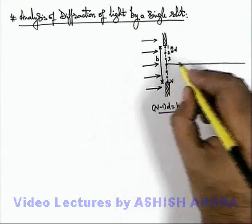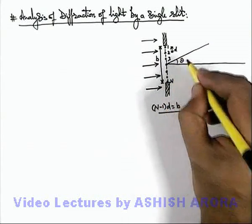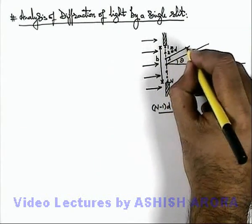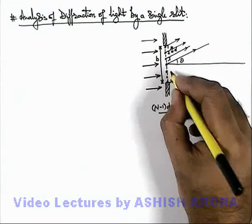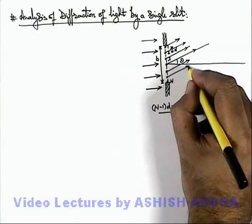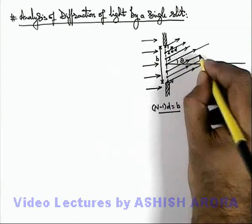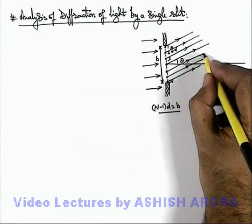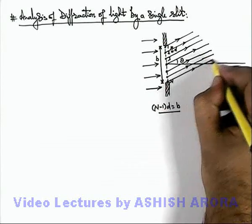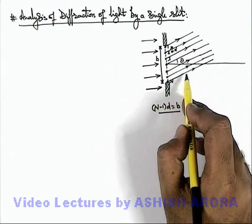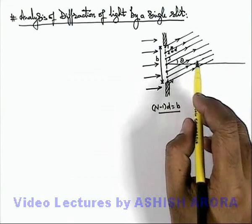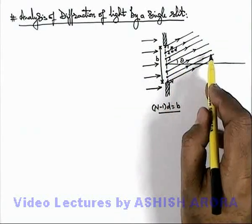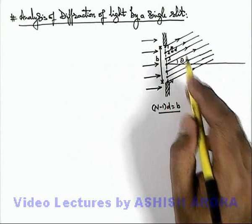Now in a specific direction at an angle theta from the direction of incident light, if we consider all the light waves going parallel from all the wavelets, then these light waves will interfere at a very far away distance from the slit. To analyze the resulting intensity of interference due to all these waves, we need to first find the phase difference between the adjoining wavelets, and correspondingly calculate the resulting intensity.